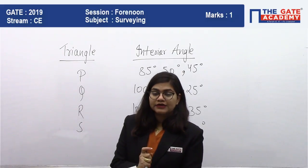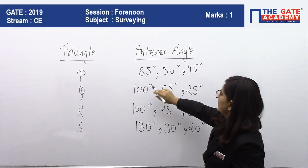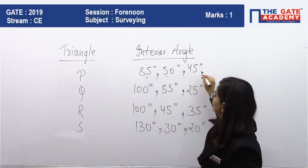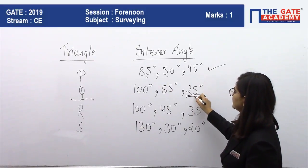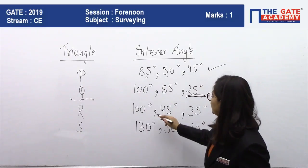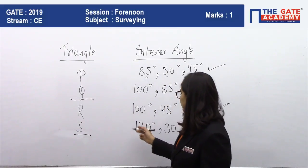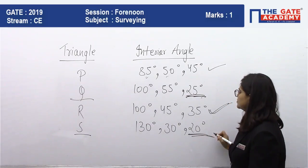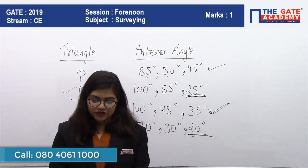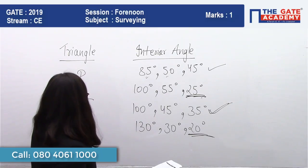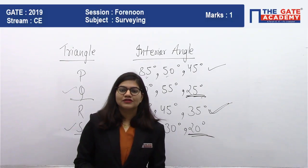For triangle P, all angles — 85°, 50°, and 45° — are between 30° and 120°, so it is acceptable. For triangle Q, the angle 25° is less than 30°, so it is ill-conditioned. For triangle R, all angles are between 30° and 120°, so it is fine. For triangle S, the angle 20° is less than 30°, making it ill-conditioned as well. Therefore, triangles Q and S are ill-conditioned and should be avoided in triangulation.